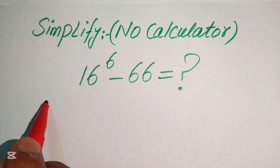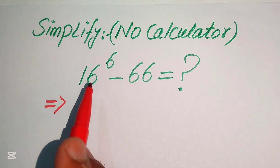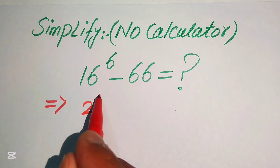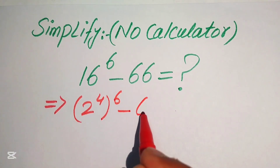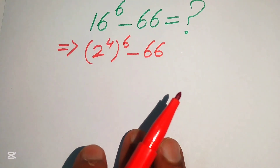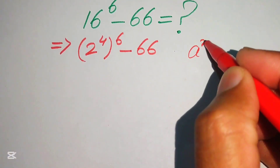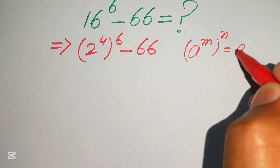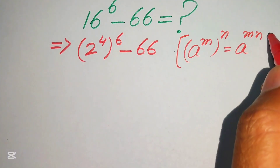The very first step is to rewrite this expression. Since 16 equals 2 to the power of 4, we write 2 to the power of 4 with exponent 6 minus 66. In the next step we apply the exponent law: if we have a to the power of m, to the power of n, it equals a to the power of m multiplied by n.